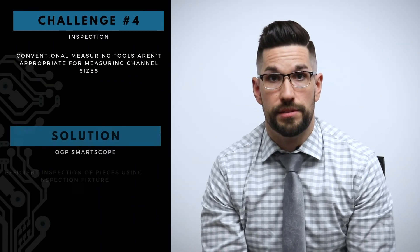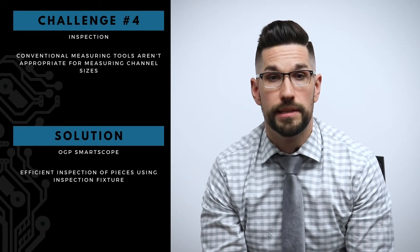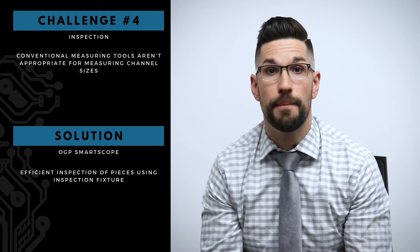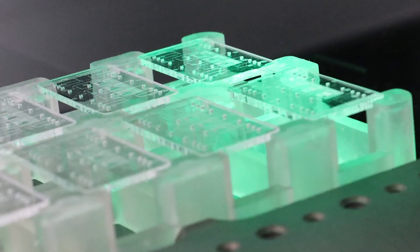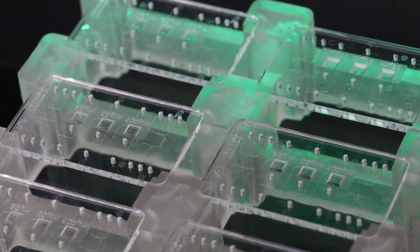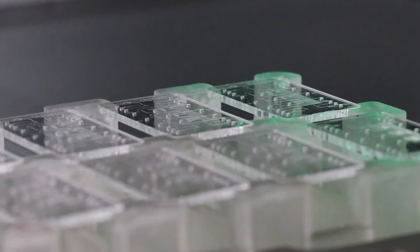So what we ended up getting was an OGP smart scope, which has the capability to zoom down to many times what your eyeball can see. And we're able to inspect a number of pieces at a given time using an inspection fixture. And what we found was that not only were we able to mold channels that were down to 25 microns in channel width, but also hold a tolerance of plus or minus three microns, which is an unbelievable feat.